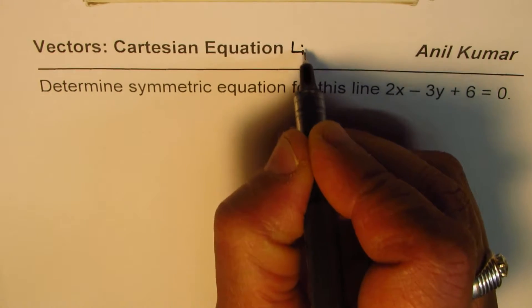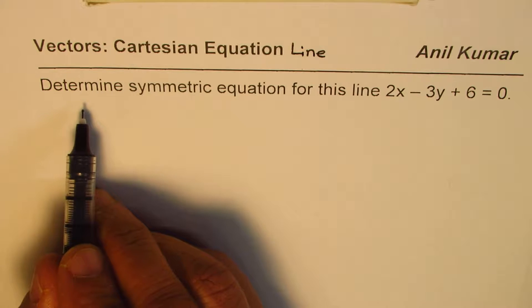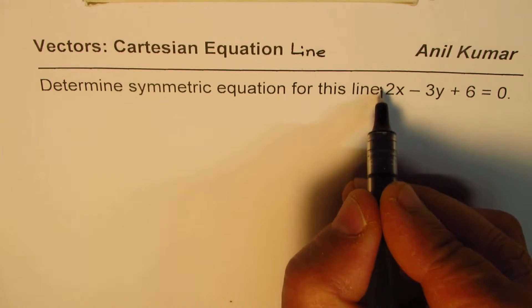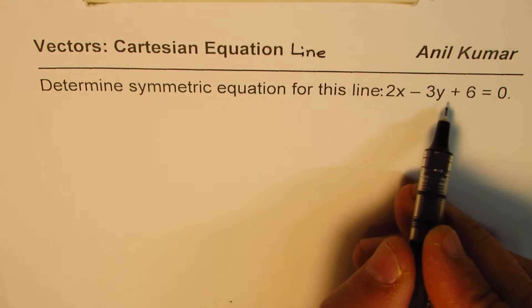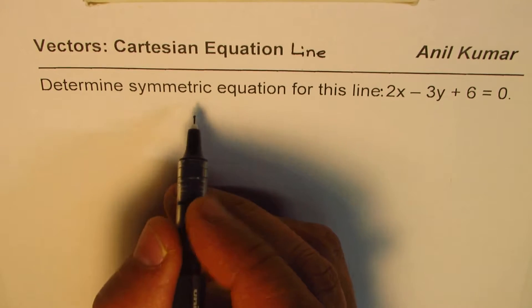We'll use Cartesian equation, and the question here is, determine symmetric equation for this line, which is 2x minus 3y plus 6 equals to 0. Now, what is symmetric equation?